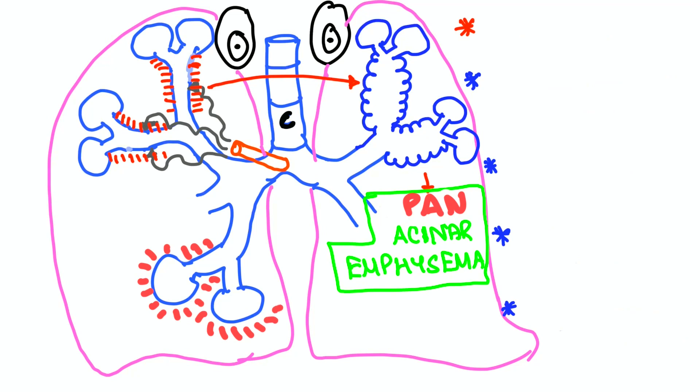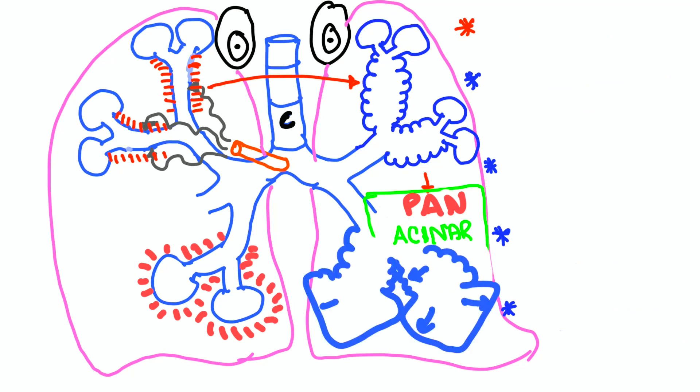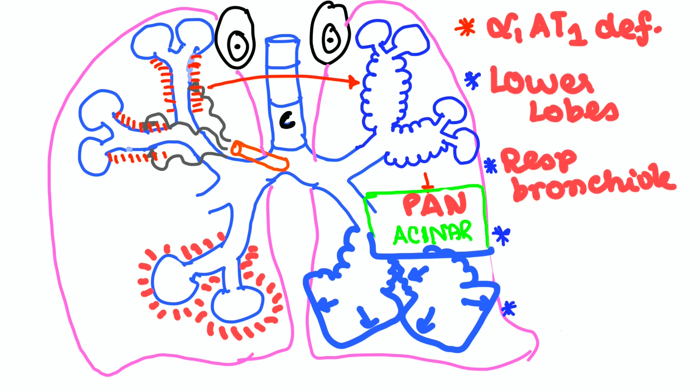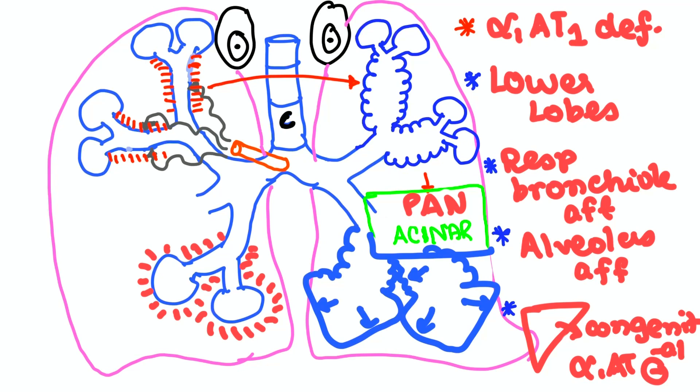Next is panacinar emphysema, affecting the respiratory bronchioles as well as the alveoli. Everything is enlarged here. It is due to alpha-1 antitrypsin deficiency. Lower lobes are involved and everything, respiratory bronchioles and alveoli, are affected. In congenital alpha-1 antitrypsin deficiency, there will be liver involvement more than lung involvement. Normally, this alpha-1 antitrypsin will protect our body against attack of protease enzymes.